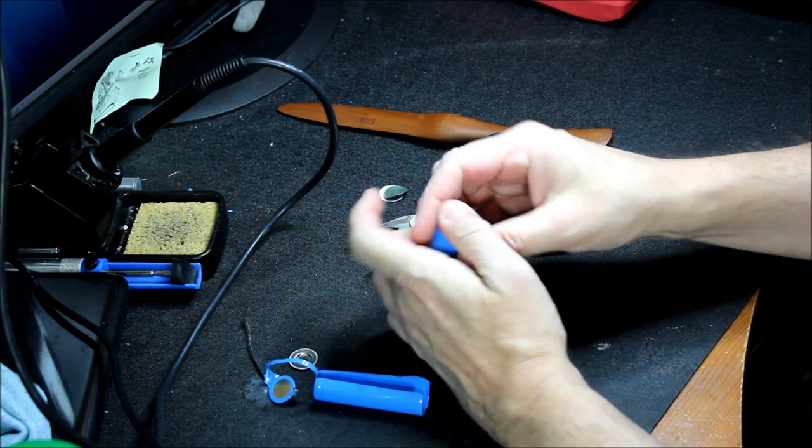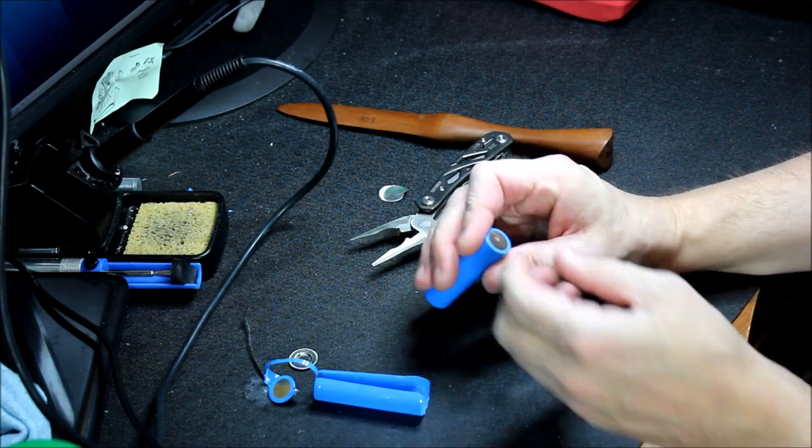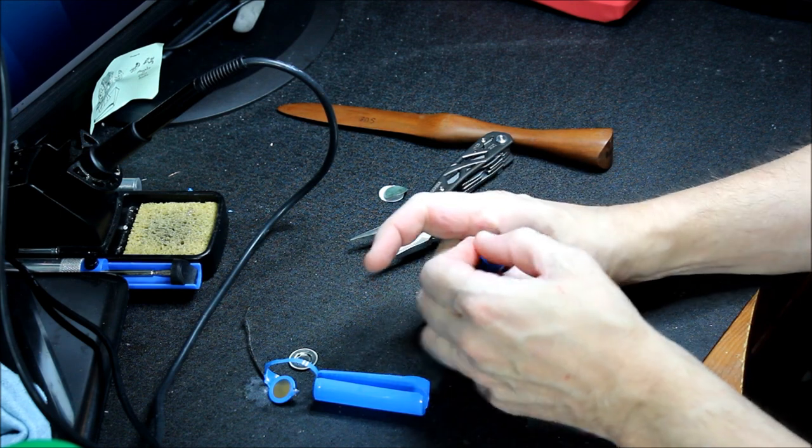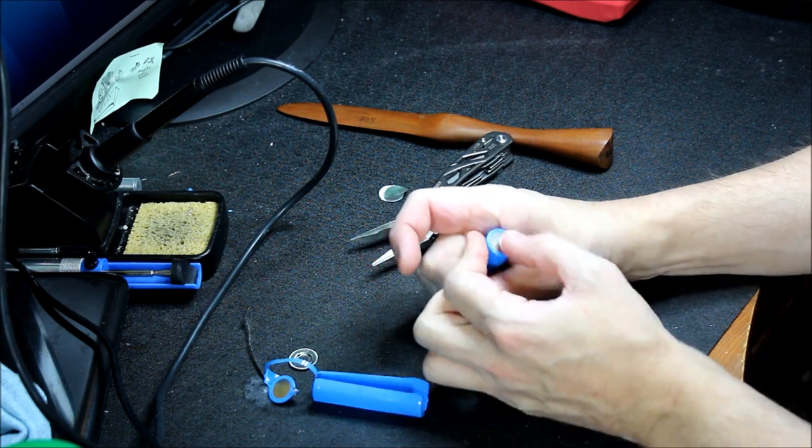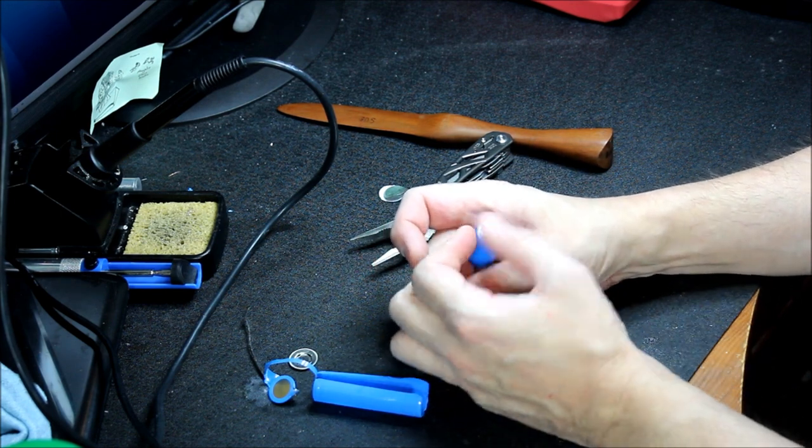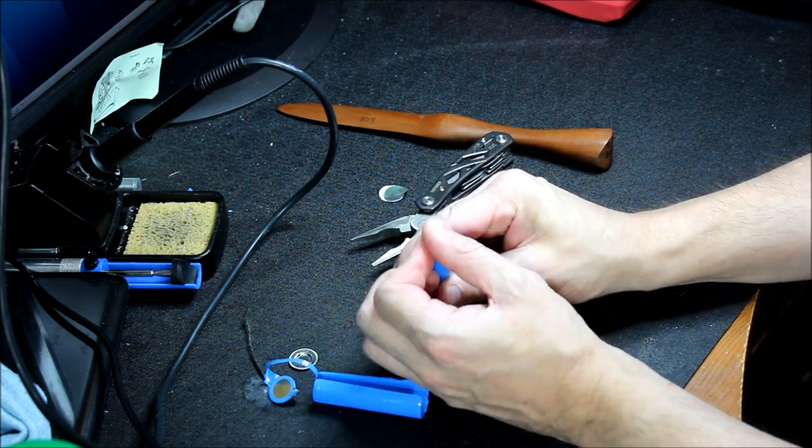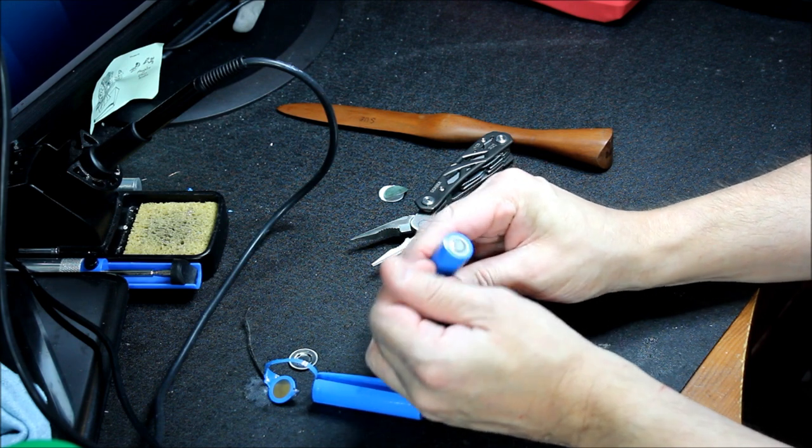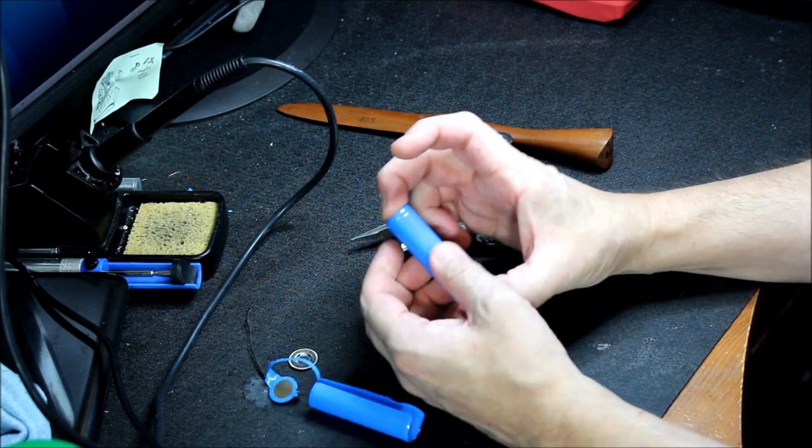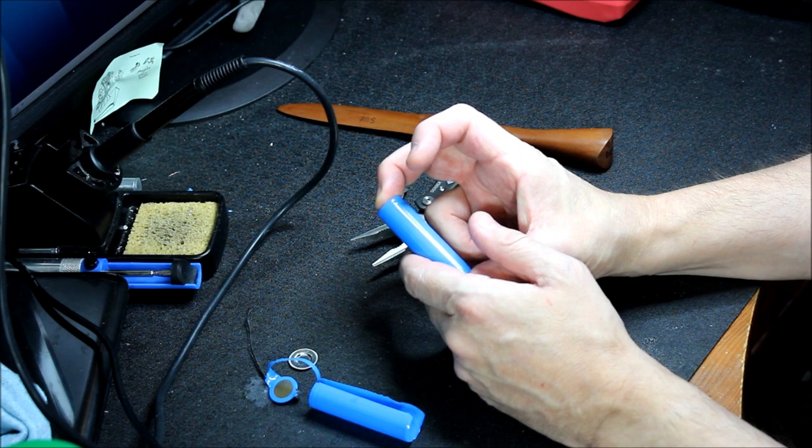A bit of adhesive there. You can either rub that off like that, or you can get a piece of paper towel and some solvent—either ethyl alcohol, methanol, something like that. So we now have an unprotected 18650.